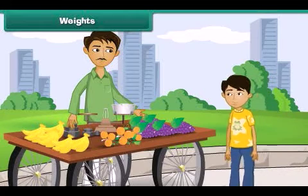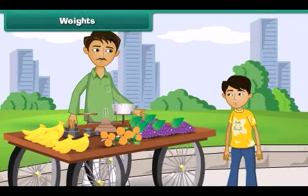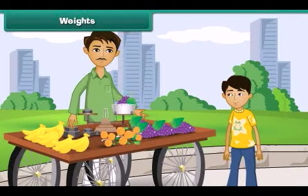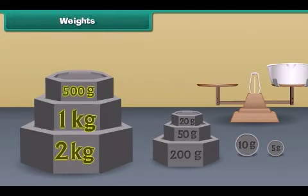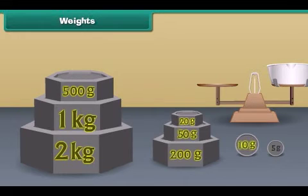When we go to a fruit seller, he uses different types of weights to balance the required amount of objects. Some weights used to measure are: 2 kg, 1 kg, 500 grams, 200 grams, 50 grams, 20 grams, 10 grams, and 5 grams.